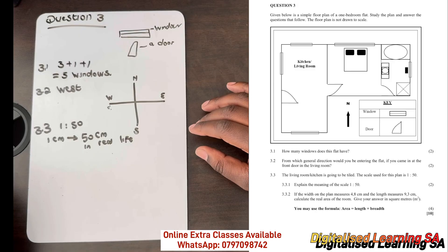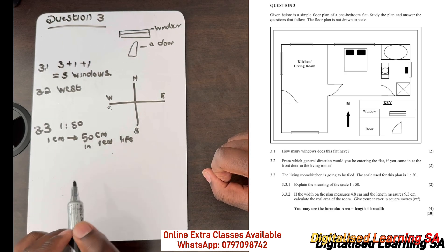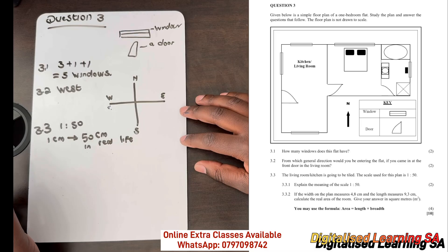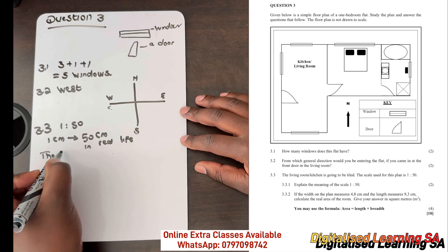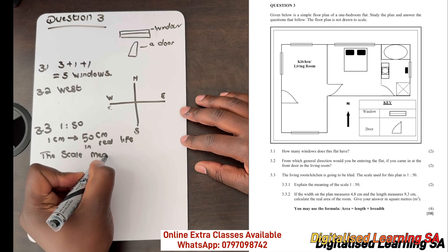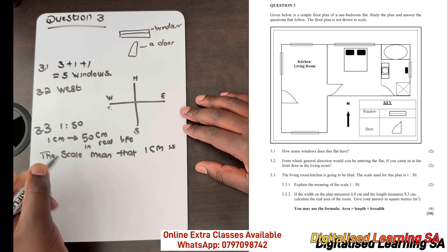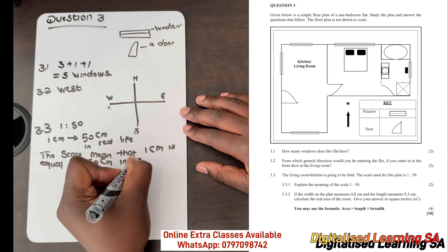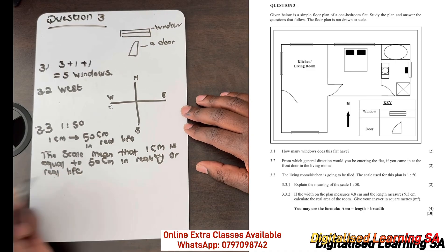For example, if the living room measures 10 centimeters on the plan, it means that in real life it is 10 multiplied by 50. So the scale means that 1 centimeter equals 50 centimeters in reality or real life.